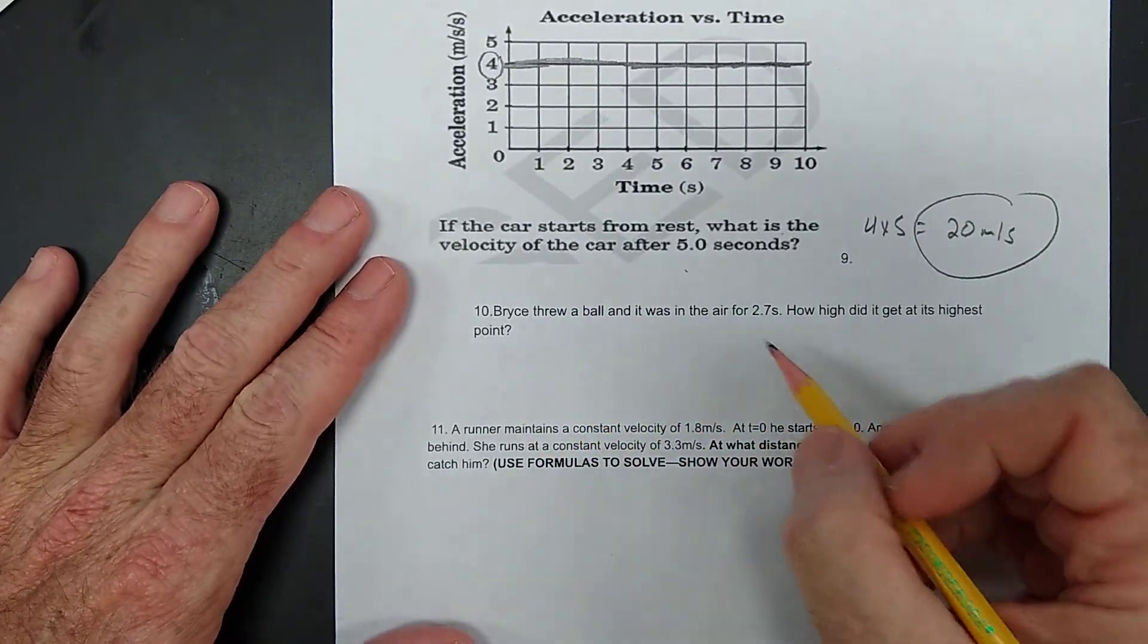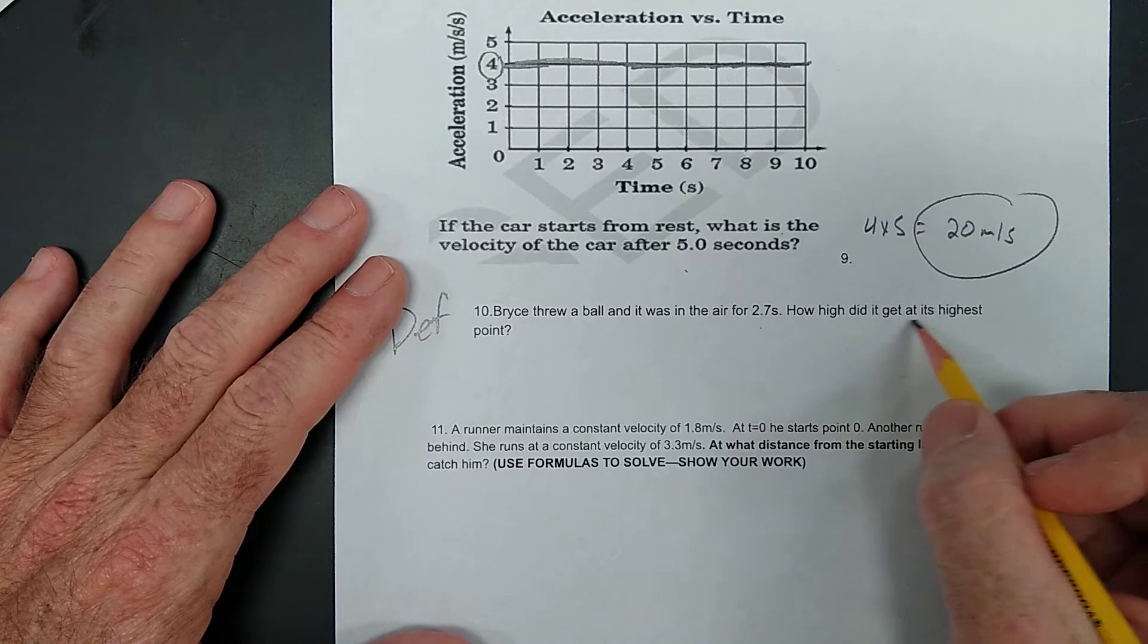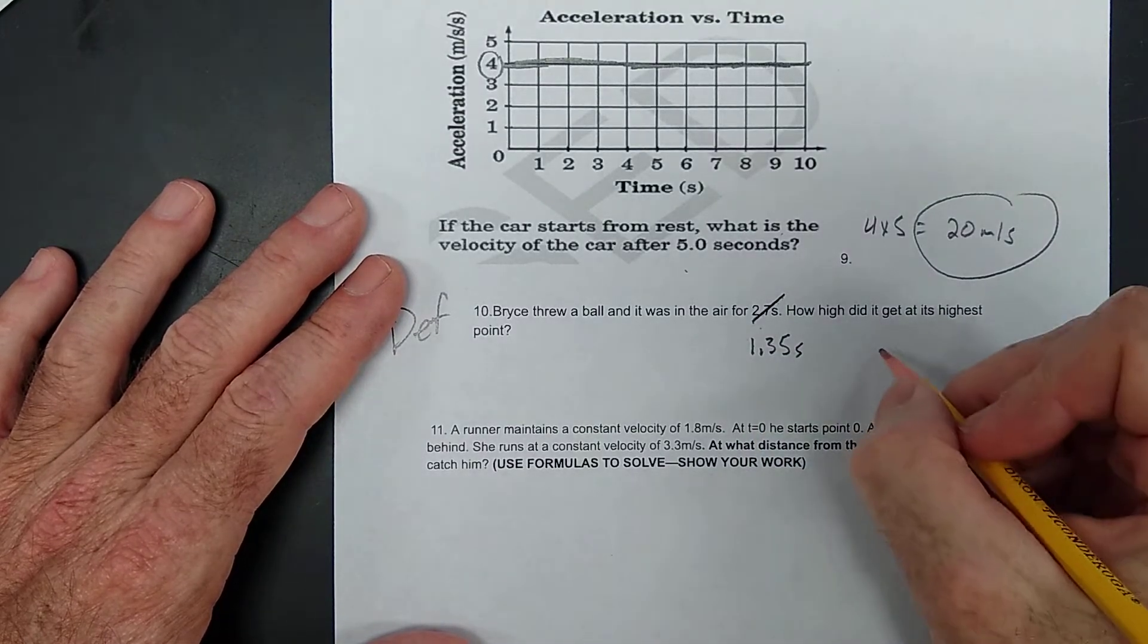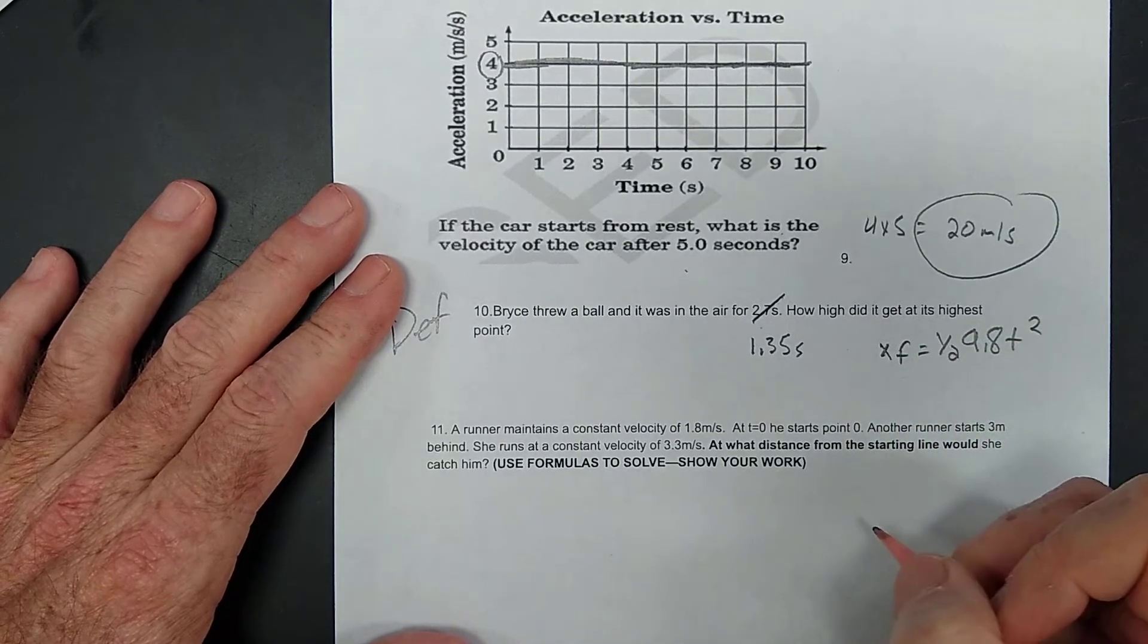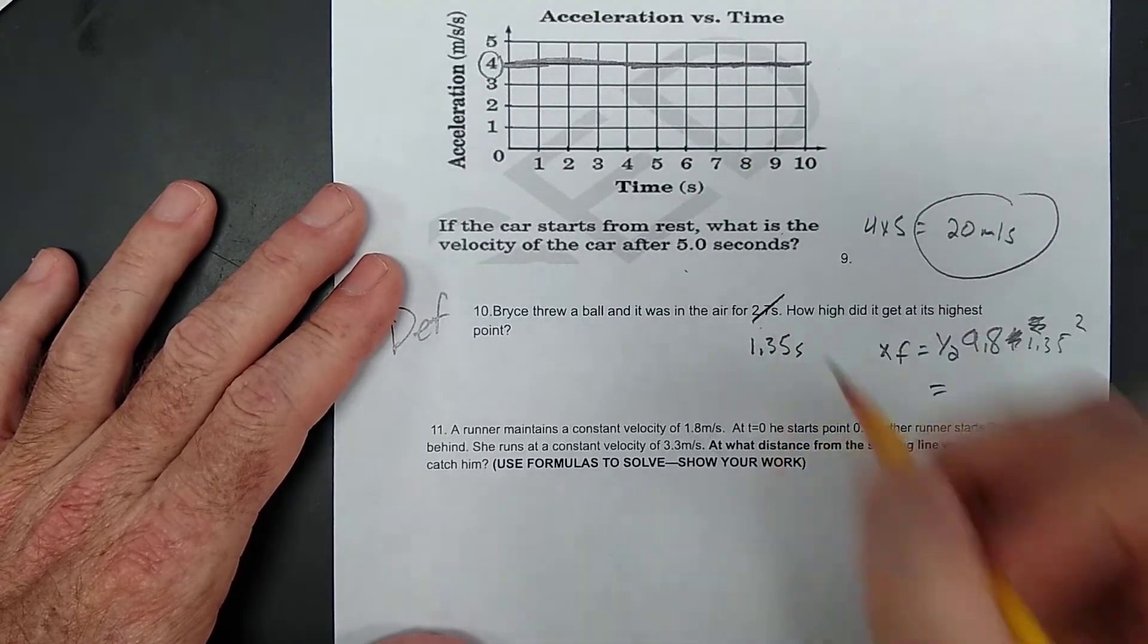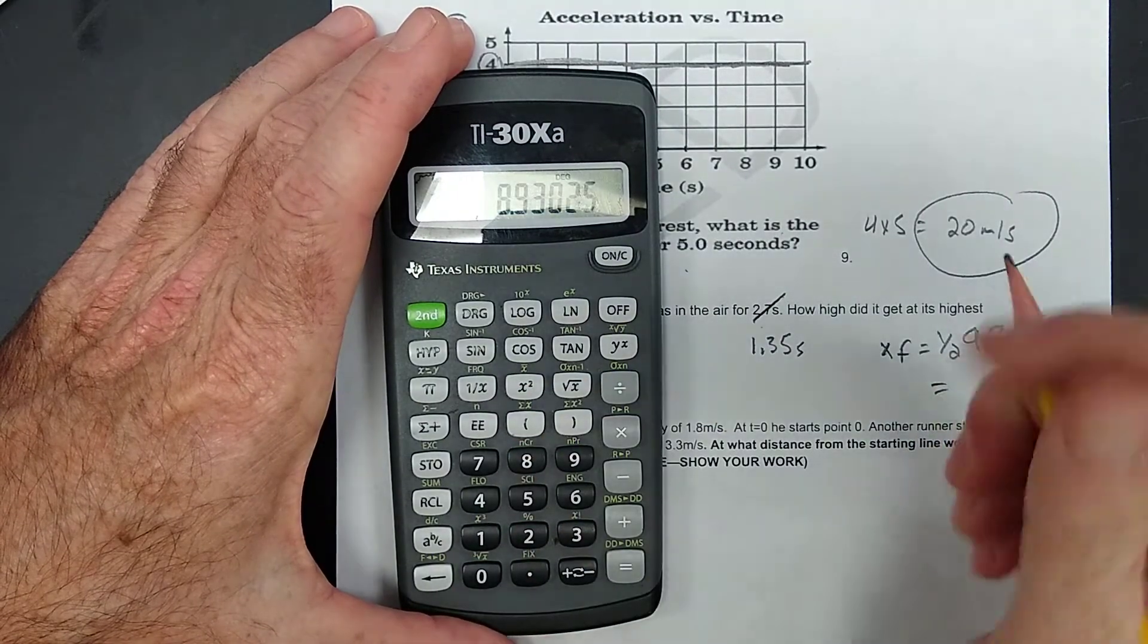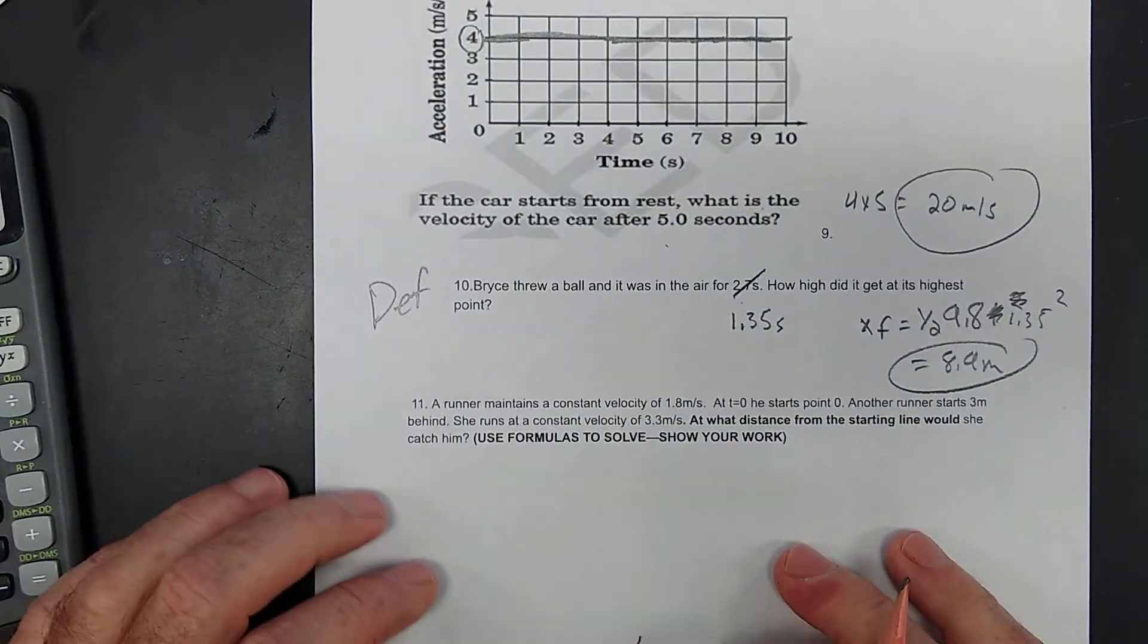Bryce threw a ball. It was in the air for 2. Boy, this is definitely on your test. It's in the air for 2.7 seconds. How high did it get? Well, it only went up for half that time. So, we have to use 1.35 seconds. How about this? Just good old fashioned. XF equals one half A T squared. So, that's going to be 1.35 squared. Because you're only taking the up times. Alright, here we go. 4.9 times 1.35 squared equals 8.9 meters. That's how high it went. Definitely on your test.